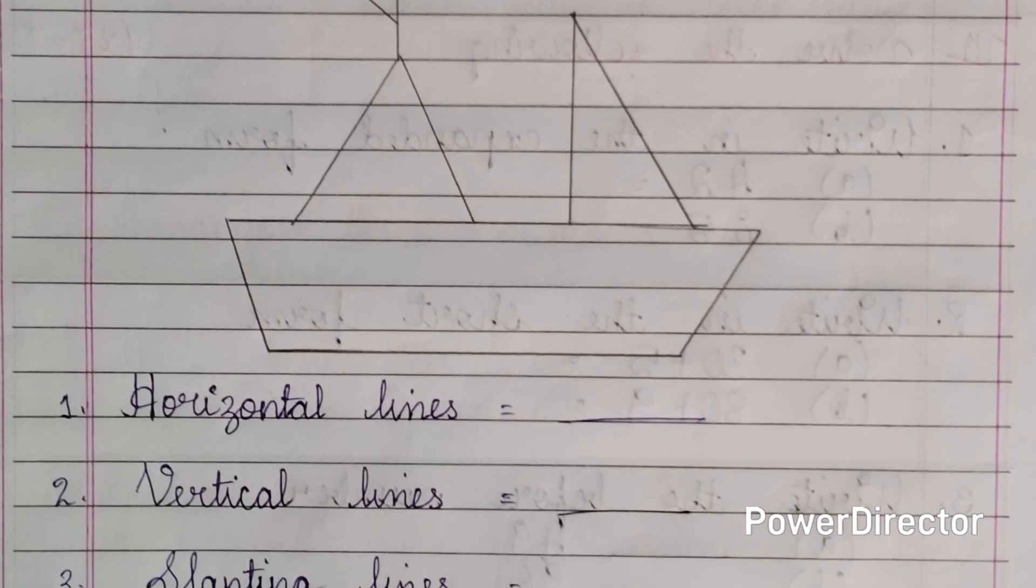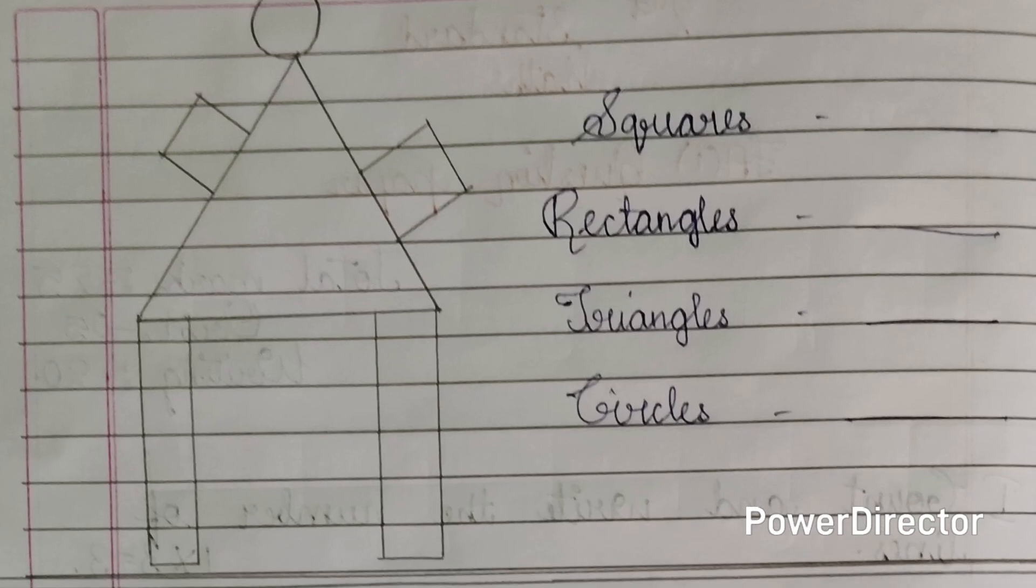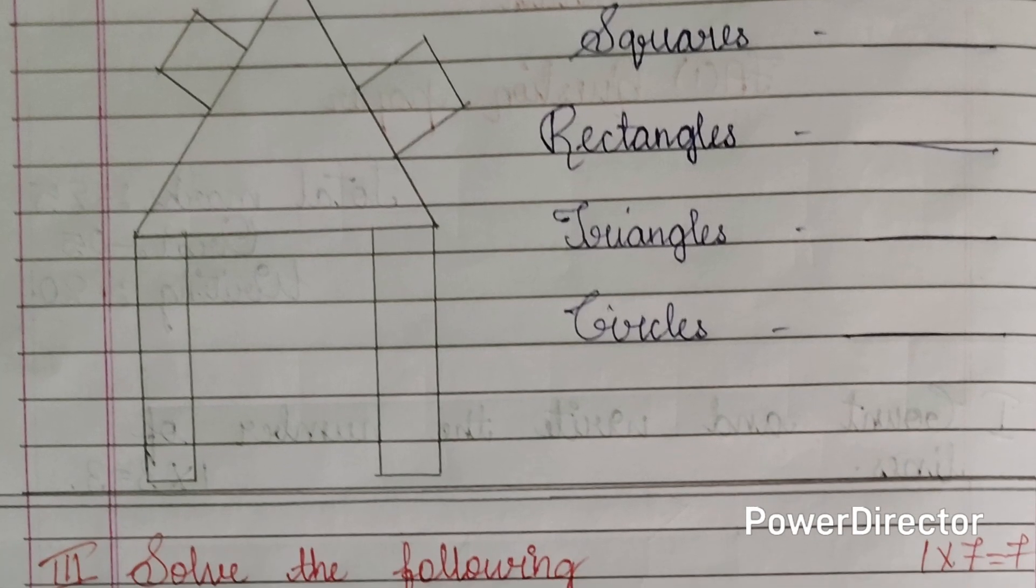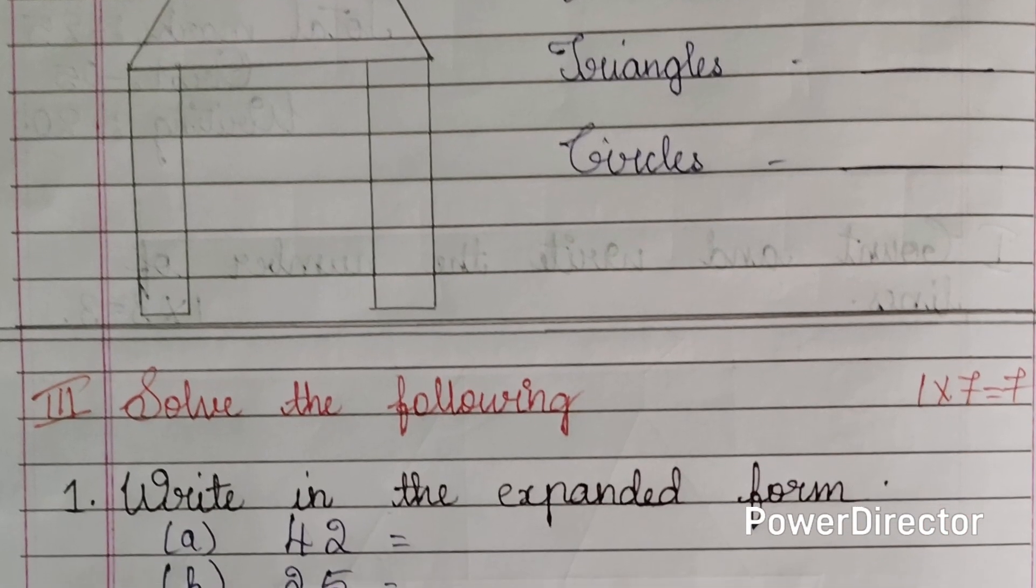Next second main, count and write the number of squares, rectangles, triangles and circles. Here again one picture is given, you need to count and write number of squares, rectangles, triangles and circles for this two marks.